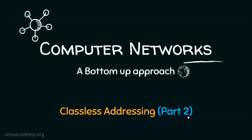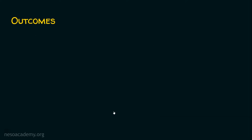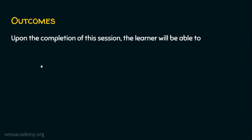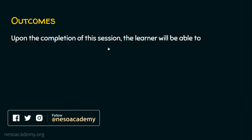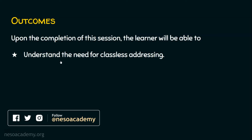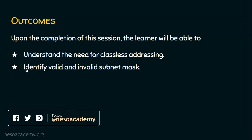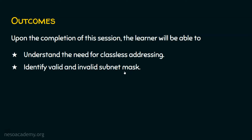We are now in part two of classless addressing. Upon completion of this session, the learner will be able to: outcome one — understand the need for classless addressing, and outcome two — identify valid and invalid subnet masks with the help of an activity.